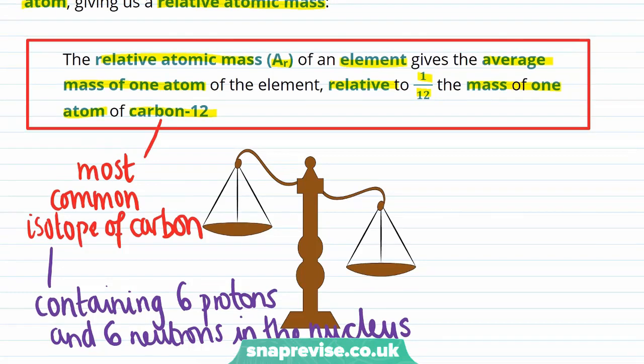And that is where this one twelfth comes from in the definition, allowing the mass of the lightest element, hydrogen, to be close to one. Remember, electrons will also contribute some mass to the mass of an atom, but this is very small compared to protons and neutrons. The point is that this is a wordy definition that you need to remember, but that one twelfth of the mass of an atom of carbon-12 was just chosen in order to give chemists all over the world one reference point.